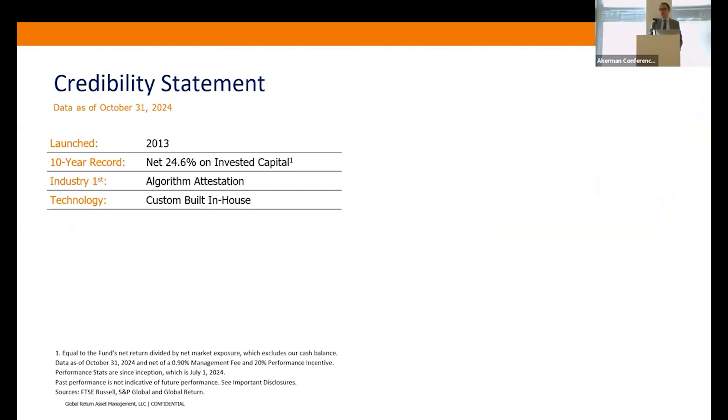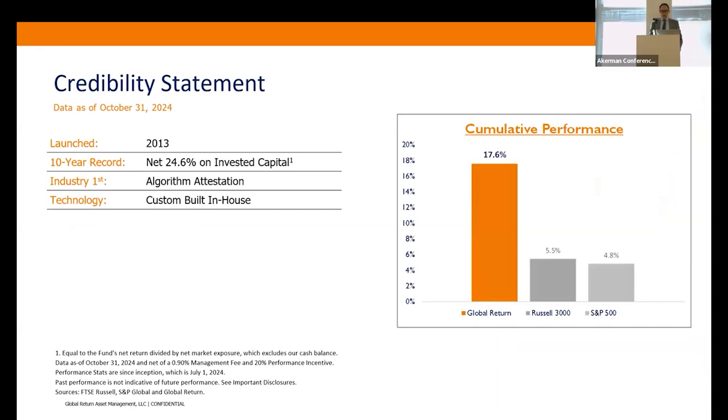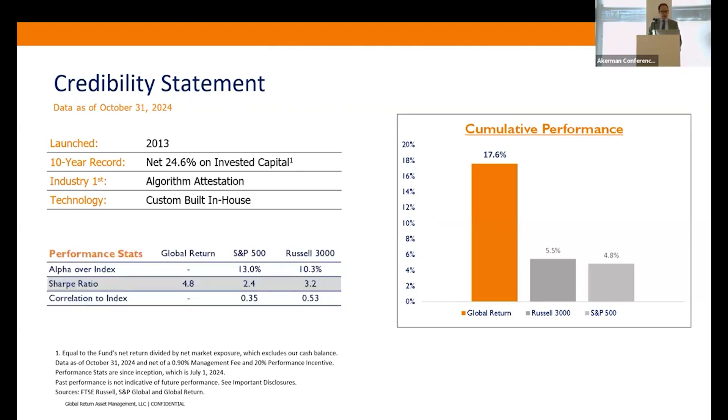In July we launched this new strategy, which is really just a revised 2.0 of our first strategy. Since July, you can see on a lunatic basis we're significantly outperforming the two benchmarks. From an alpha and Sharpe standpoint, you can see we've done that with very low correlation to the major markets.